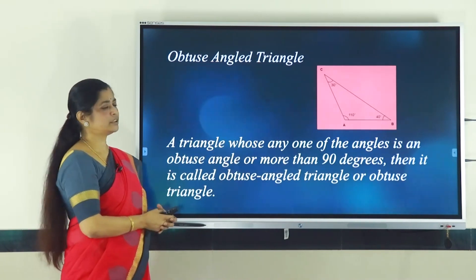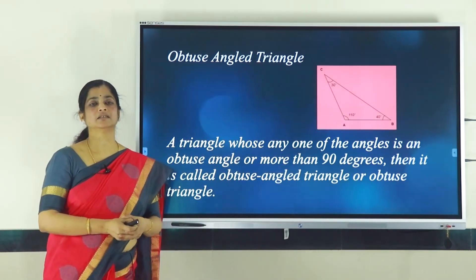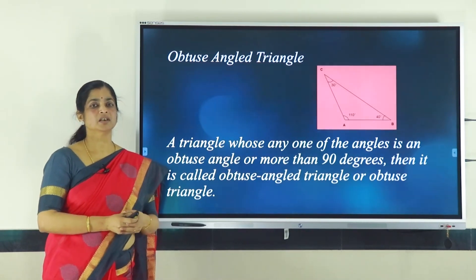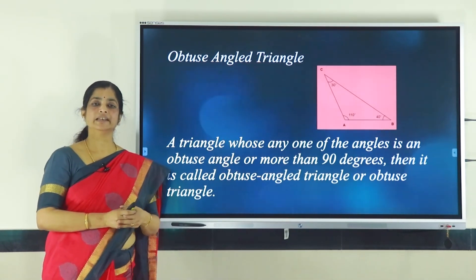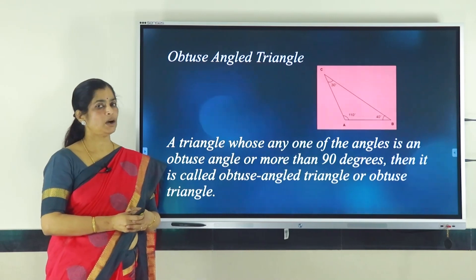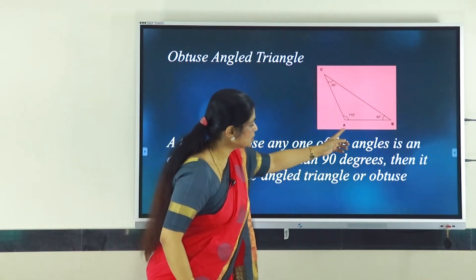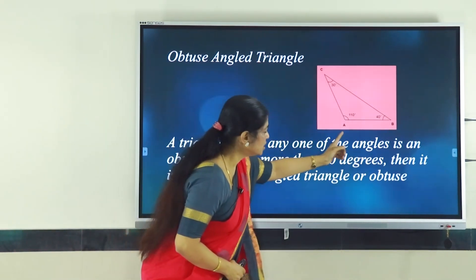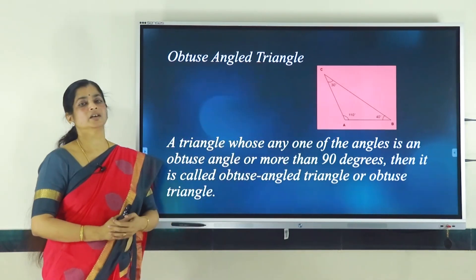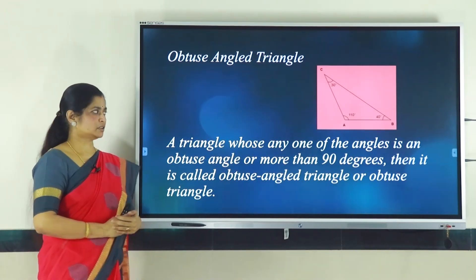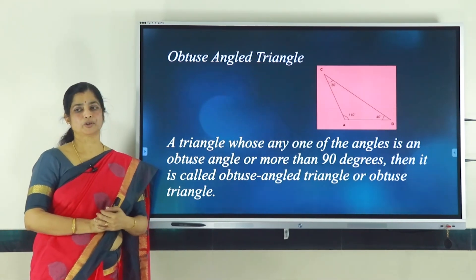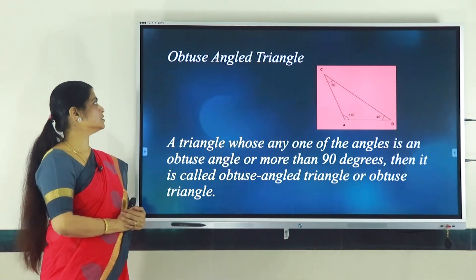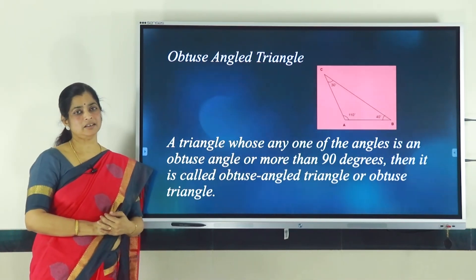Next, we are going to study about obtuse angle triangle. Obtuse means an angle which is greater than 90 but less than 180. In the figure, you can see one angle is greater than 90, that is 110 degrees, which is an obtuse angle. One angle will be obtuse and the other two will be acute. Such a triangle is called an obtuse angle triangle.